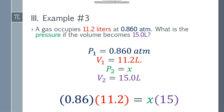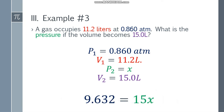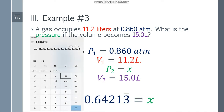Substituting: 0.86 multiplied by 11.2 equals x times 15. The left side of the equation gives us 9.632, and the right side is 15x. Dividing both sides by 15, x equals 0.64213 repeating decimal.